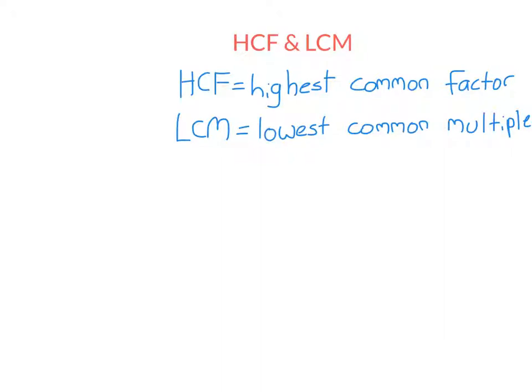Make sure you don't get these two things mixed up, as a lot of people do. We're going to be given two numbers and find the highest common factor, which is the highest number that goes into both numbers, and the lowest common multiple, which is the lowest number that's divisible by both numbers. These concepts are very important for fractions — highest common factor is needed to simplify fractions, and lowest common multiple is needed to add fractions. But there are many other areas of maths that require these concepts.